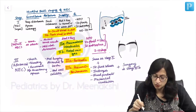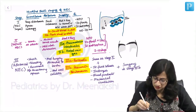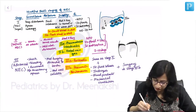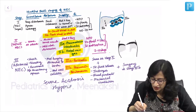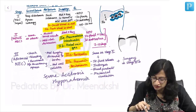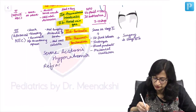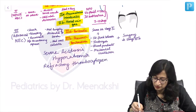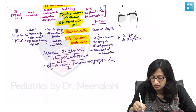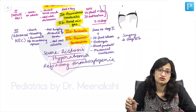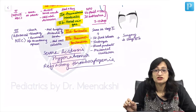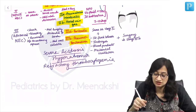In the most severe stage of NEC, blood investigation findings include severe metabolic acidosis, hyponatremia, and refractory thrombocytopenia. NEC is a very severe disorder where, despite the best possible treatment, it carries a mortality risk of 10 to 30 percent.